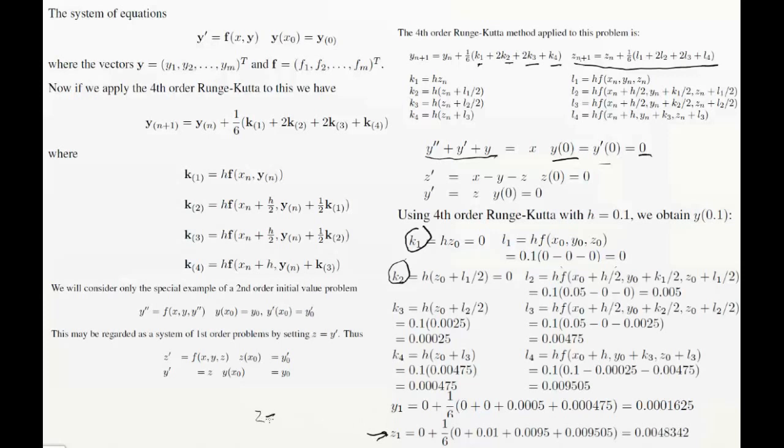So if you think about it, z is actually y prime. So this means that what this is telling us is that, well, look, it's telling us that the y, y at 0.1, okay, is this value, this value that you see here, okay, and z, then what is this z1 telling us? Well, it's telling us that y dash, okay, at 0.1, approximately, is in fact, this value.